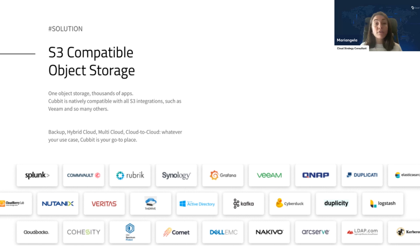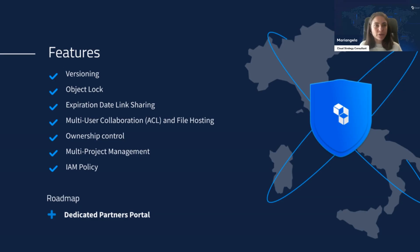Most clients already have some redundancy on-premise and back up with Veeam, Commvault, Synology, or really any other S3-compatible client on the market. They natively connect those with Cabit. Being a very standard S3-compatible solution, you'll be able to unlock features such as versioning, object locking to make your data immutable, create links with expiration dates, or set up ACL and IAM policies.